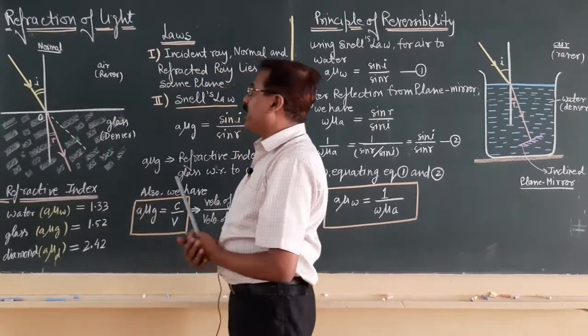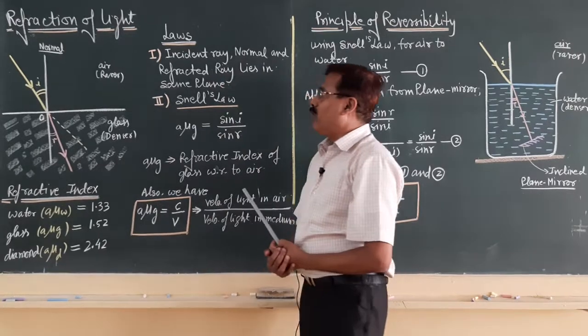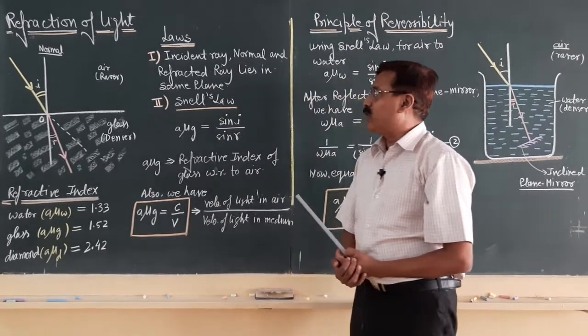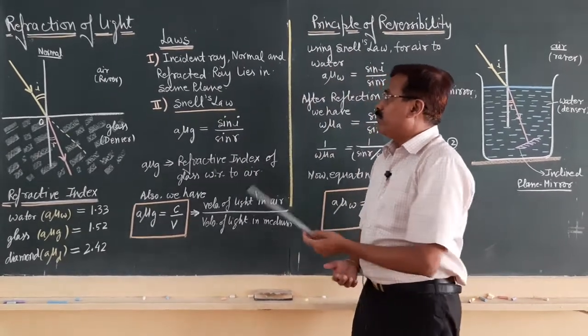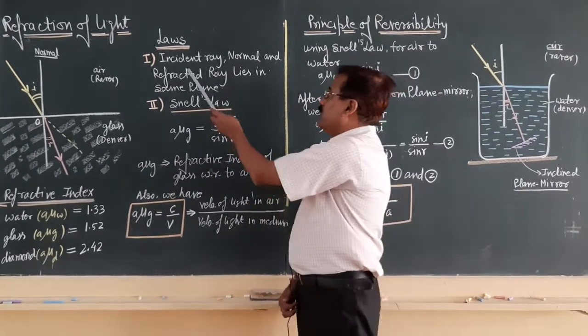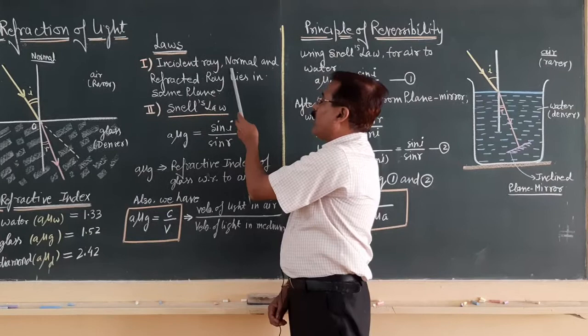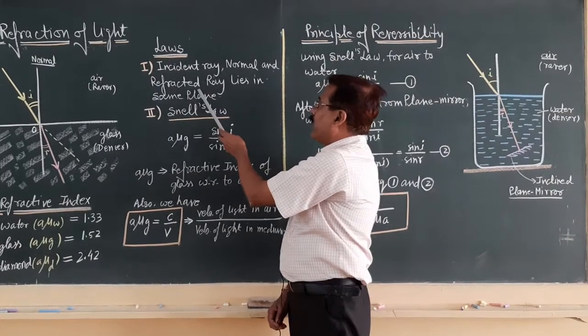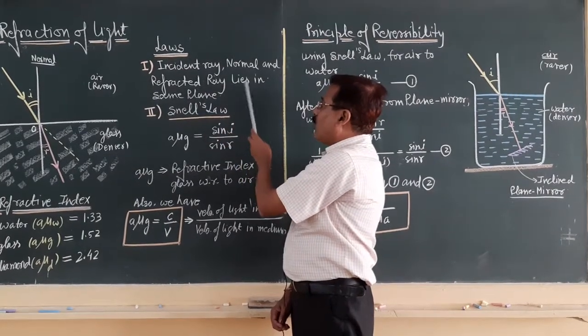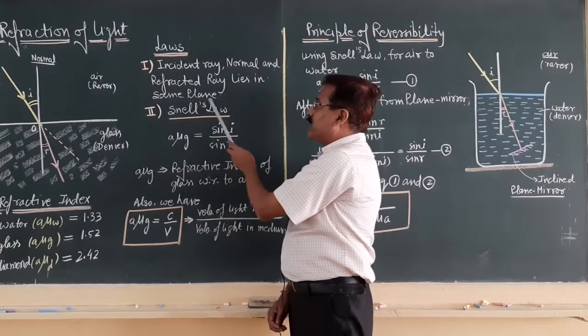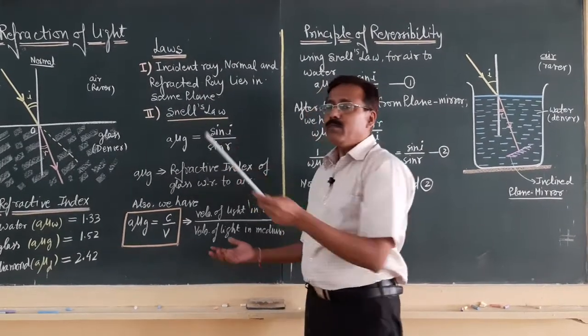Snell gave two laws for refraction of light. First, the incident ray, normal, and refracted ray always lie in the same plane.